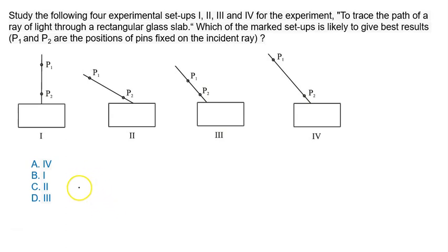If you look at the first situation, here the incident ray is normal. Whenever the ray incidents normally, it does not bend, it passes straight, it remains undeviated.